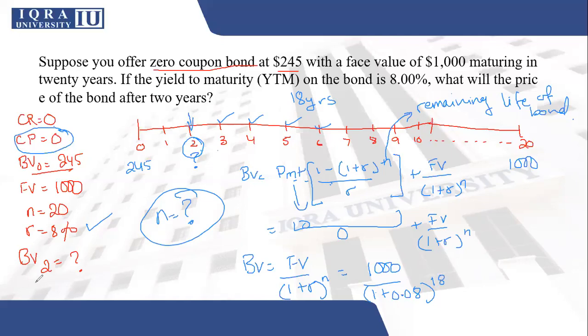Yes. The complete maturity of the bond is 20 years. But if you had purchased the bond right now, if you wanted to know the price right now, then you would have used an n of 20 because n represents the remaining life of the bond. But you want the price two years later. So two years later, the remaining life of the bond is going to be 18 years. It's like somebody's life, you know, somebody is going to live for 20 years and you take two years out of their life. So they are left with 18 years of their life.